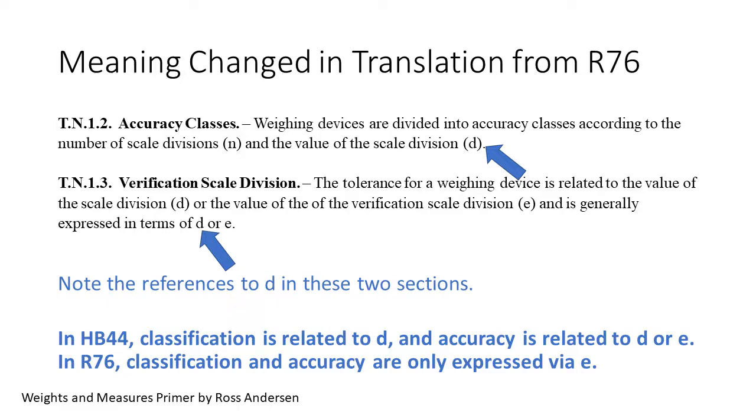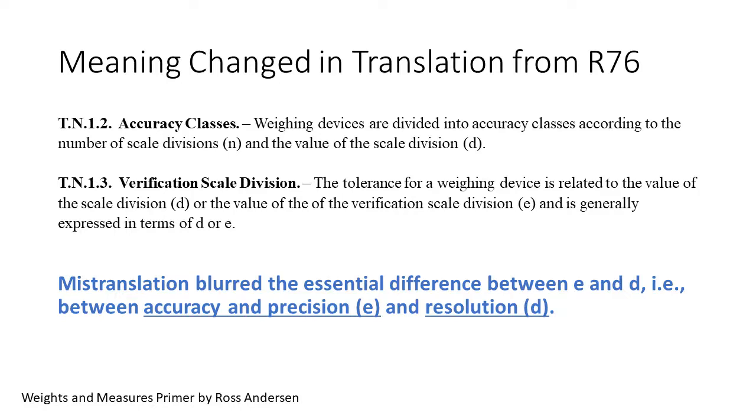Note the reference to D in both sections. Looking at the definitions, also adopted in 1984, we find that classification and tolerances are only tied to the verification scale division E, not to D. The definition D contains nothing about either topic. Classifications in Table 3 are expressed in D or E, even though TN1-2 only refers to D. The tolerances in Table 6 are exclusively in D, even though TN1-3 says D or E. Finally, when we compare to the parallel sections of R76, we find classification and accuracy are expressed solely in E. The mistranslations blurred an important distinction in R76 between E and D. It changed meaning significantly in several key sections of Handbook 44. The confusion that spawns from this change in meaning is far-reaching and very significant.